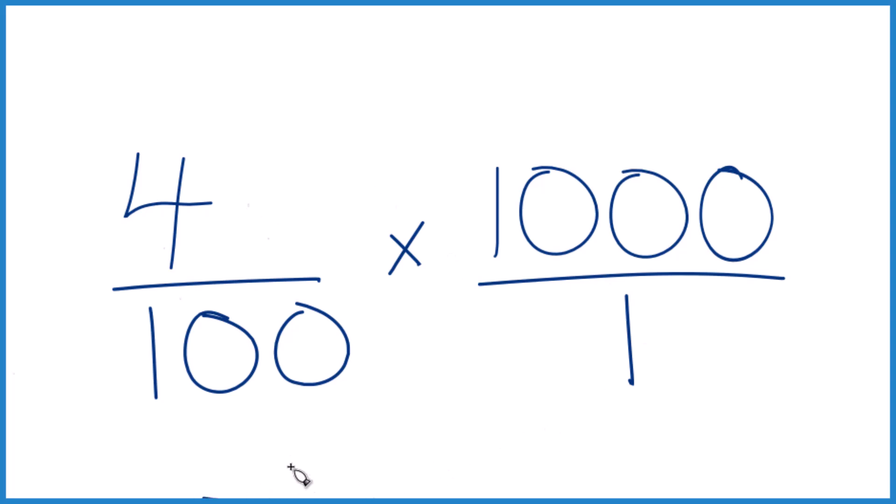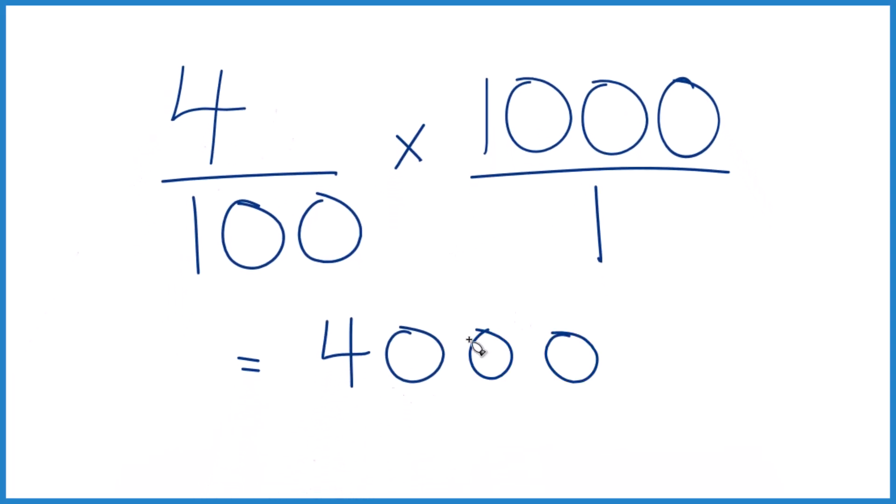4 times 1,000, that equals 4,000. And then 100 times 1, that's 100. So we could just divide, or we can just cross these out like this, and we end up with 40.